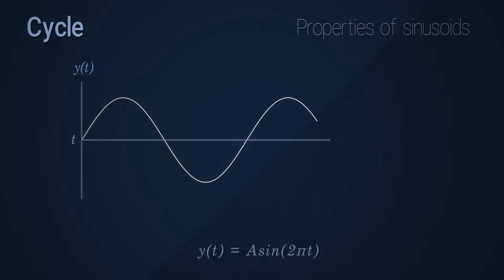A lot of interesting properties are associated with a cycle of the waveform, like the wavelength, which is represented by the Greek alphabet lambda, which is a measure of the length of the cycle, usually measured in meters.